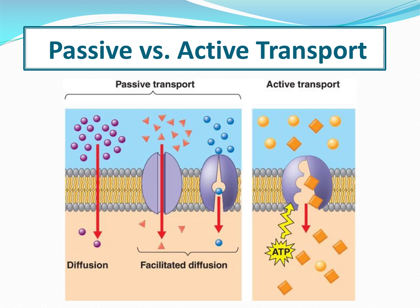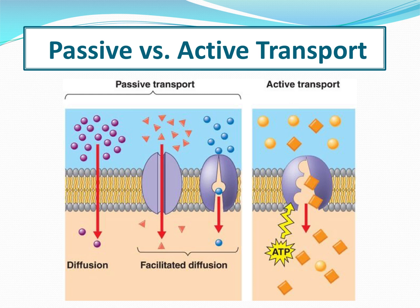There are two main ways things can move across a cell membrane: passive transport and active transport. Active transport requires energy — you see the ATP molecule, which is the energy molecule. Passive transport does not require energy. Think of a river with a current: if you go with the current, you don't have to paddle. But if you go against the current, you have to expel a lot of energy. That's what happens here, except instead of current, we talk about a concentration gradient.